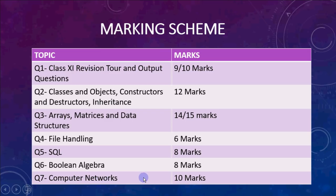Computer networks comes for 10 marks. Six marks can be theory, but 4 marks always come as a case study where they give a network layout and ask what type of cable to use, whether it should be a LAN or MAN, where to place a repeater, and so on. You can prepare those 4 marks for sure every year, and the other 6 marks are theory you need to remember.